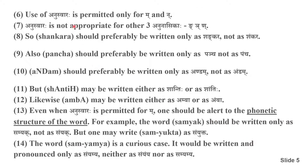Use of Anusvaraha is permitted only for Ma and Na. Anusvaraha is not appropriate for the other three Anunasikaha — Ng, Nj, and Na. The total number of Anunasikani are five. Out of these five, Anusvaraha is permitted only for Ma and Na. So Shankara should preferably be written only as Shankara, not as Shankara with a dot above Sha. Although in many Sanskrit texts you may find it written that way, it is not appropriate.